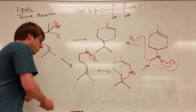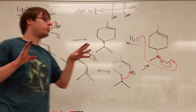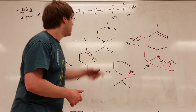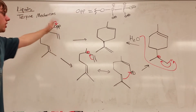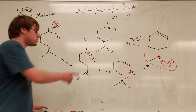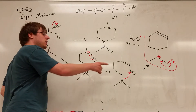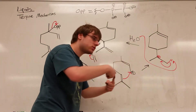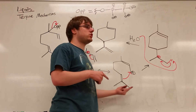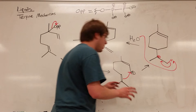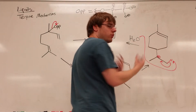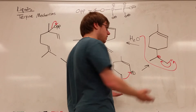So there are three things that almost always happen in every terpene mechanism you draw. One: OPP, being the leaving group, comes off and makes your carbon positive. Step two: some kind of double bond attacks a positive charge to connect the carbons. And third: you will almost always be left with a carbocation, and to get rid of it you form a double bond.